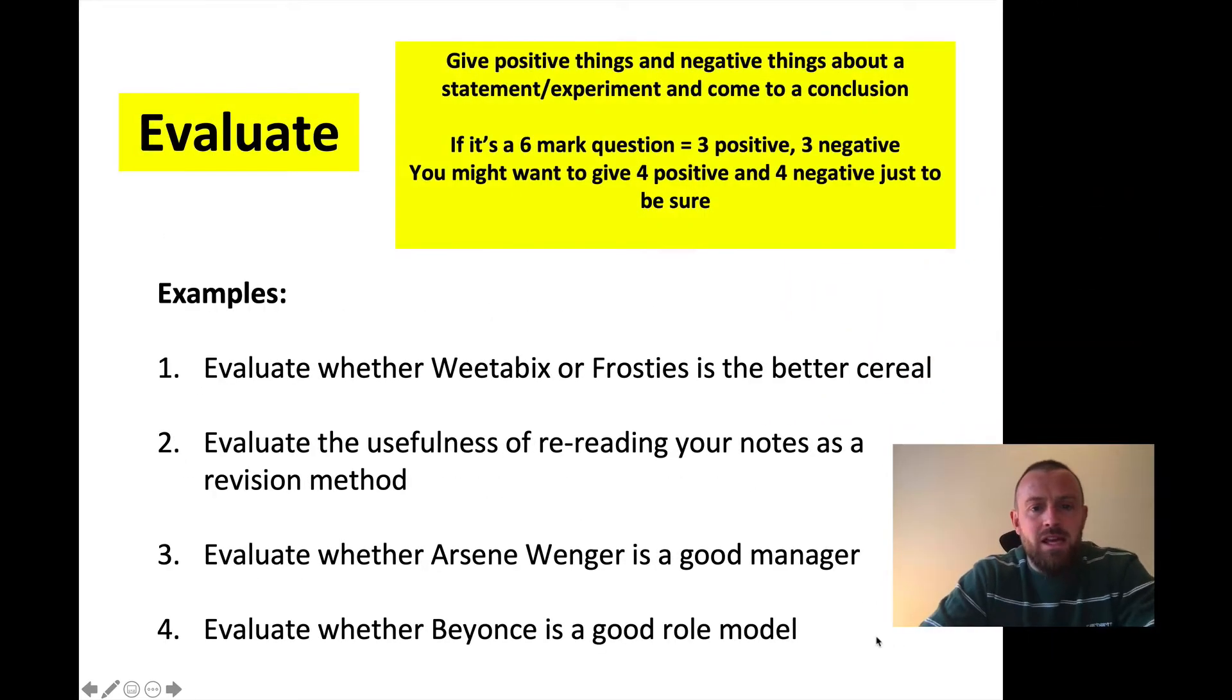Evaluate. Evaluate is about weighing things up. Quite often these are six markers. If you've got a six mark evaluate question, you'd want to give positive and negative things about a statement or an experiment and come to a conclusion. Generally speaking, if it's a six marker, you might want to give three positive, three negative, or maybe four positive and four negative just to be sure. Often, especially at A-level biology, they ask you to evaluate the conclusion that a student has made. In this case, generally the conclusion is OK but needs a lot of work. So if you get asked to evaluate a conclusion, normally it will be one or two things positive about the conclusion and then maybe four things negative - maybe two things about the method that weren't very good and two things about the analysis of data that weren't very good. That's evaluate.